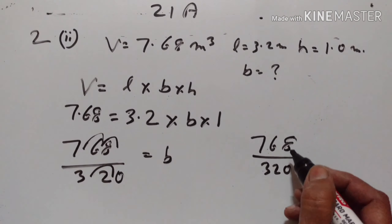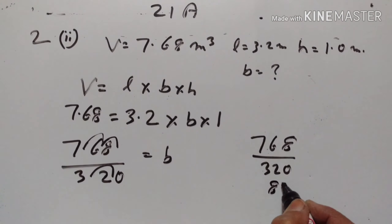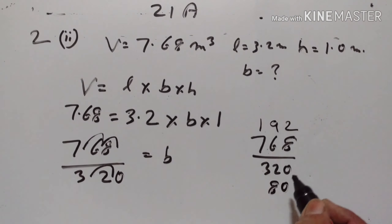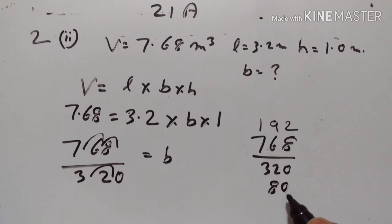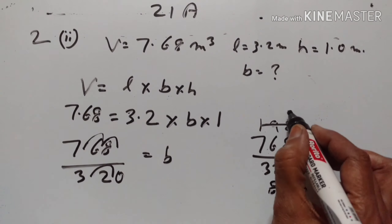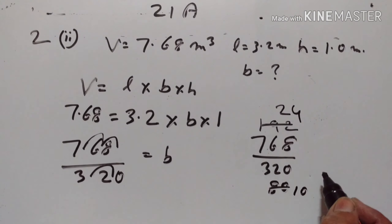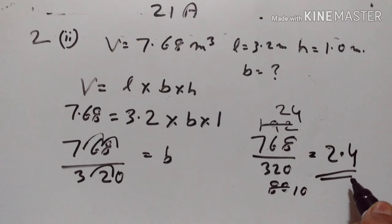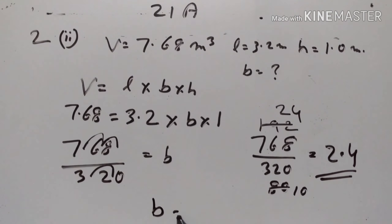Let us divide both numbers — first by 4: 4 × 8 = 32, 4 × 1 = 4, 4 × 9 = 36, 4 × 2 = 8. Then by 8: giving 24 ÷ 10 = 2.4. Therefore breadth = 2.4 m.